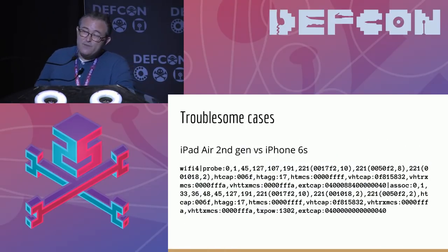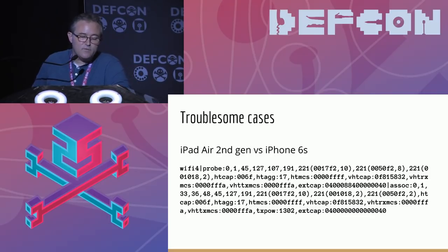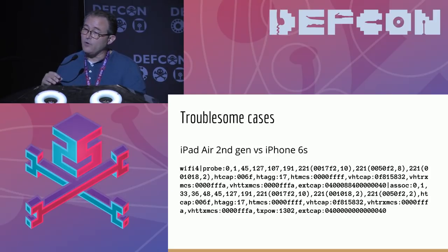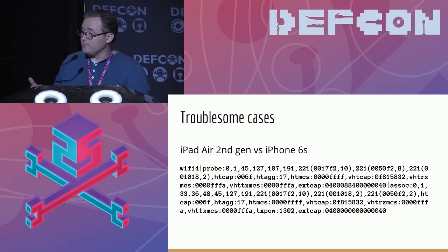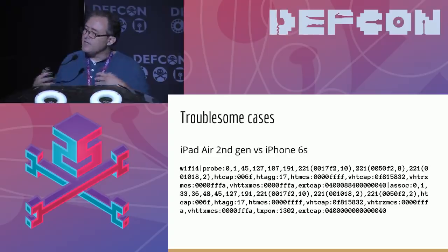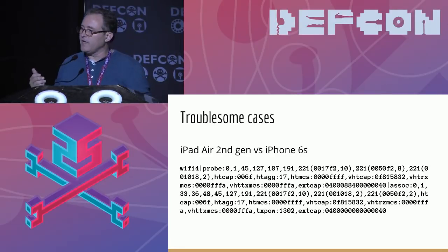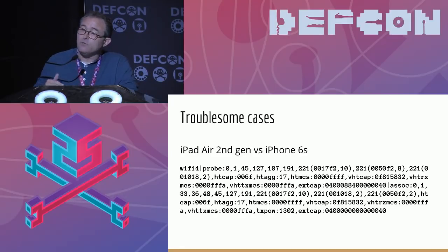There remain a few cases which are still troublesome — mainly devices made by the same vendor using the same software, the same chipset, and at about the same time. Often the transmit power information will distinguish them due to differing board designs, but not always. For example, the iPad Air second generation and iPhone 6S have the same signature. We can try to use heuristics, like if the DHCP hostname contains the string 'iPad' it's probably an iPad. But if nothing else, we return all of the possibilities.